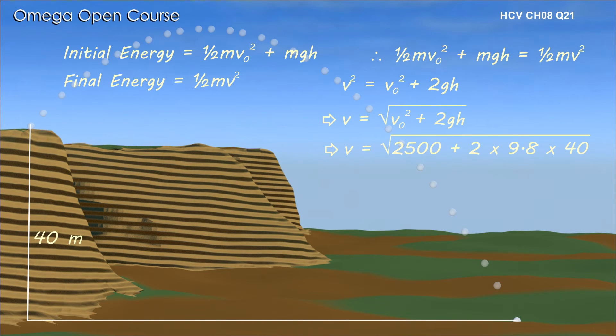Putting the values, we get v is equal to root under 2500 plus 2 into 9.8 into 40. Simplifying we get v is equal to root under 3284 meters per second, or 57.3 meters per second. This is our answer.